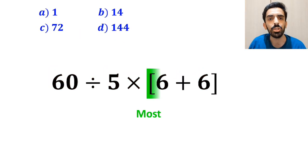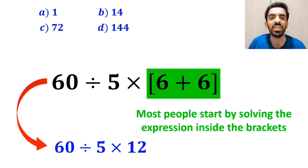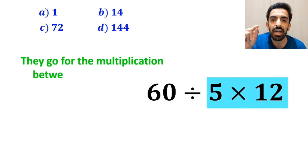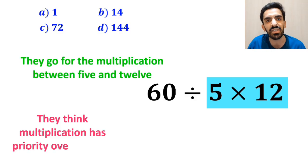The first step most people start by solving the expression inside the brackets, and replace it with 60 divided by 5 multiplied by 12. And the next step, they go for the multiplication between 5 and 12, because they think multiplication has priority over division.